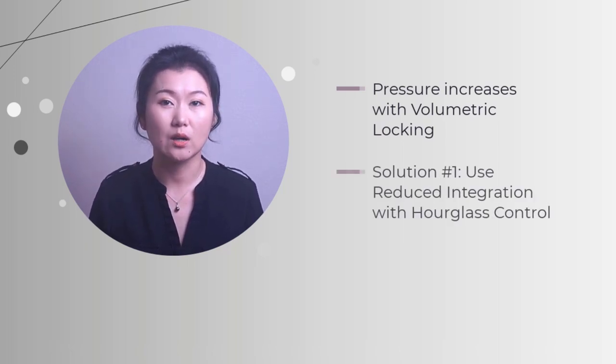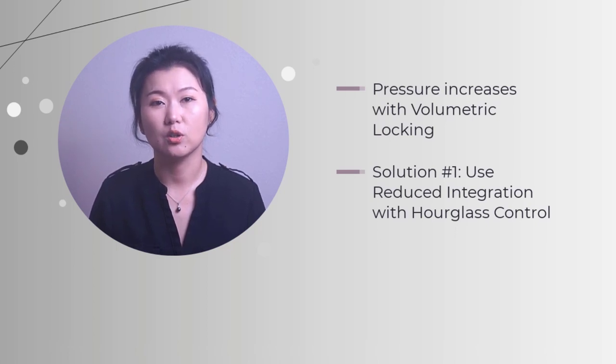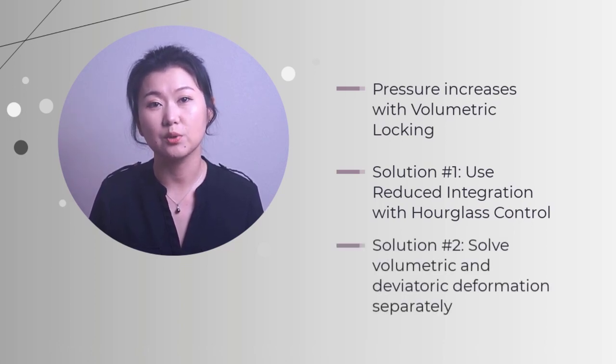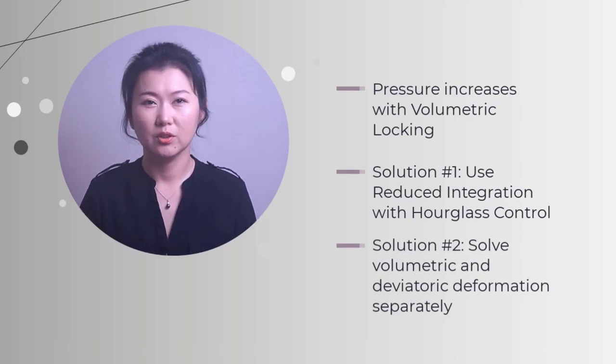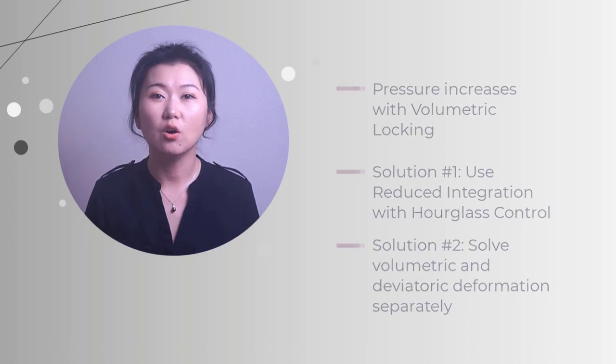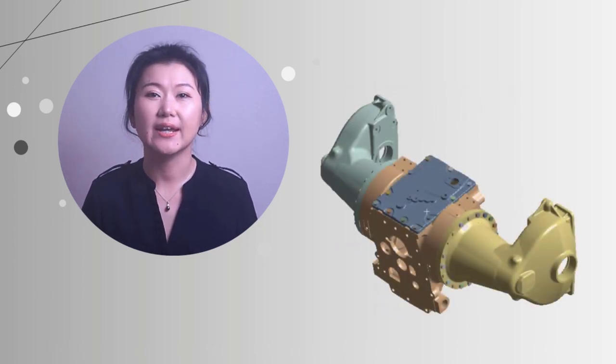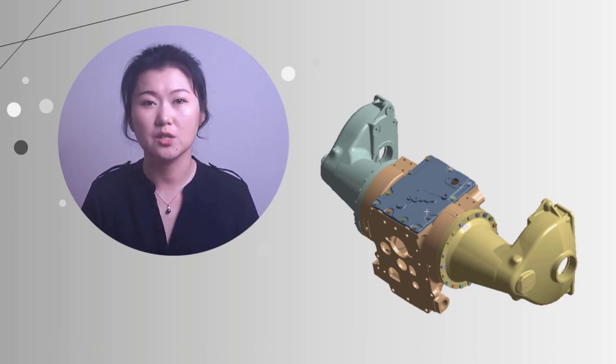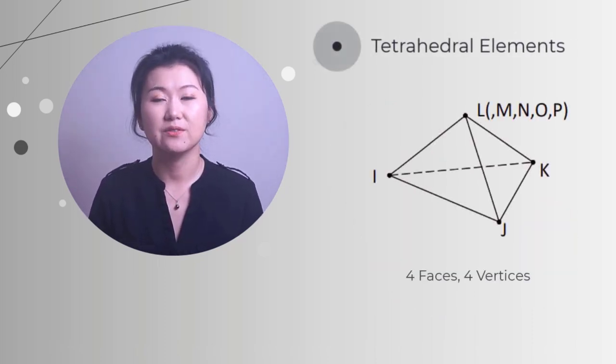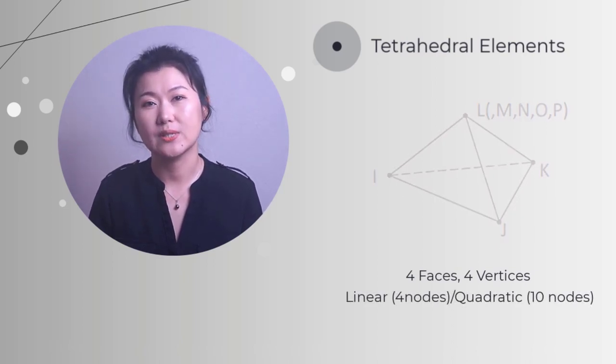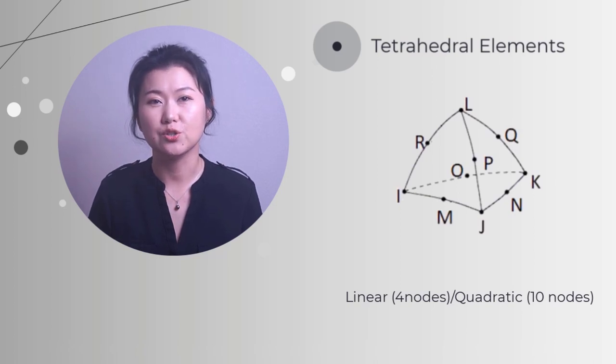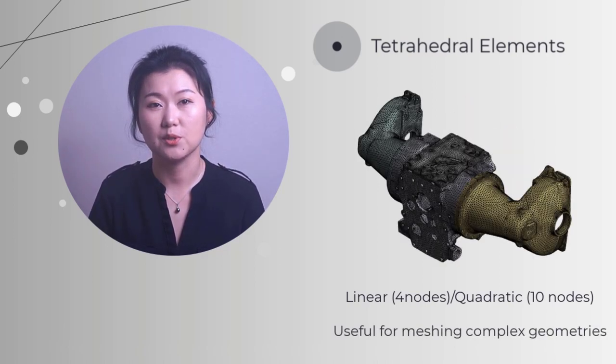So for resolving volumetric locking, we can consider use reduced integration with hourglass control. There are other numerical methods that can eliminate volumetric locking behavior. For example, some solvers may solve volumetric and deviatoric deformations separately to avoid the locking problem. For now, we've been talking about hex elements. However, not all geometries can be meshed by hex elements. Nowadays, finite element simulations often target on large-scale problems with complex geometries. In these cases, tetrahedral elements become handy. A tetrahedral element has 4 faces and 4 vertices. It can be linear with 4 nodes or quadratic with 10 nodes. And it can use full integration or reduced integration. Compared to hex element, tetrahedral element is much more conducive to filling in regions of very complex geometries without sacrificing the element quality.